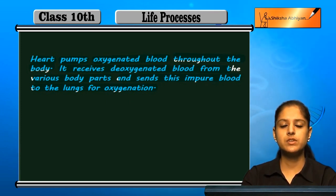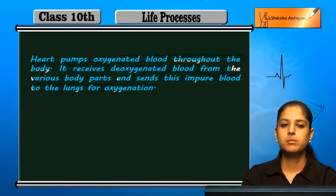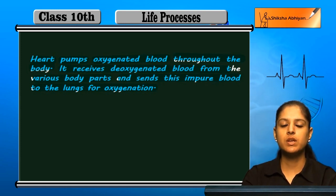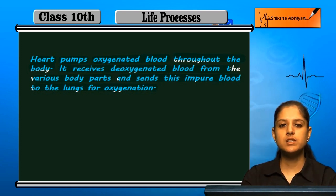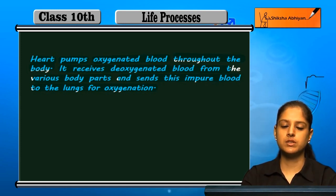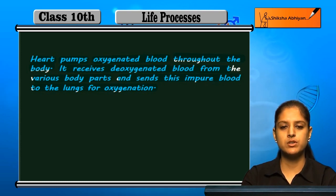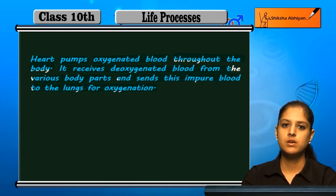So there are three components — blood, blood vessels, and heart — which work together as the transport system in a human being. These are the three components and their functions.